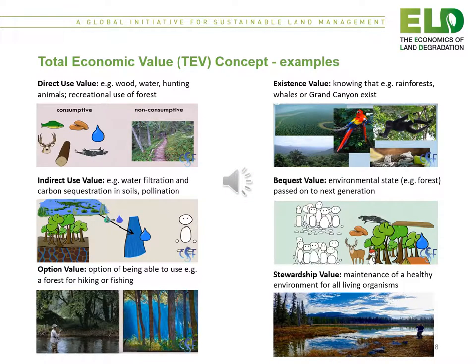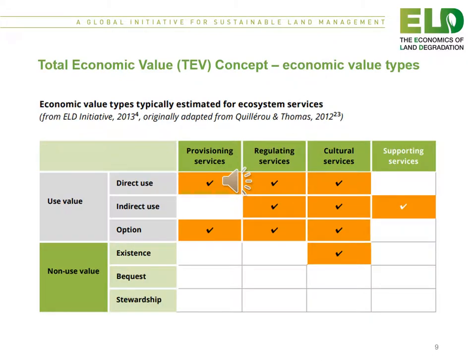This slide shows some examples of those different use and non-use values. This figure shows the link between the use and non-use value and the four categories of ecosystem services: provisioning, regulating, cultural and supporting services.